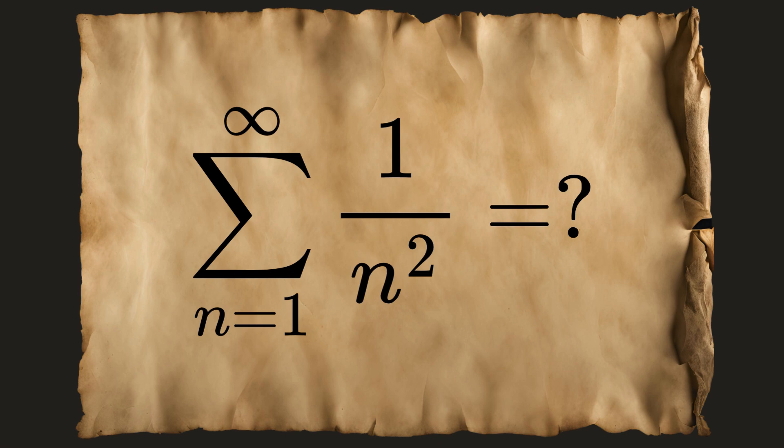The Basel problem asks for the precise sum of the reciprocals of the squares of the natural numbers. In mathematical terms, it seeks the exact value of the series ∑(n=1 to ∞) 1/n² from n equals 1 to infinity.